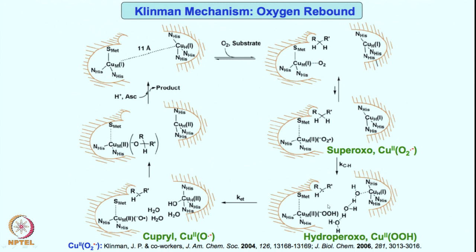The cupric oxyl and the radical then combine to give the copper alkoxide, the product goes out, and ascorbate comes into the picture for reducing the copper center, and the overall catalytic cycle continues. A similar mechanism can be drawn for copper hydroperoxo as the active species — meaning the substrate does not react at the superoxo step in that alternative mechanism, but the electron transfer occurs there.